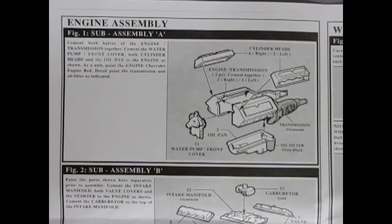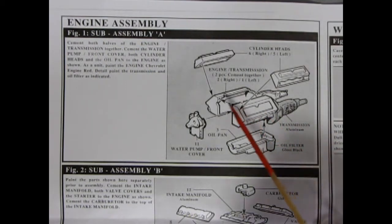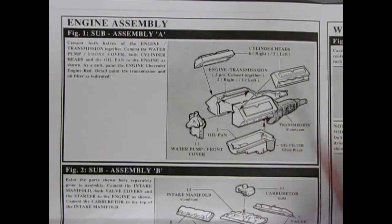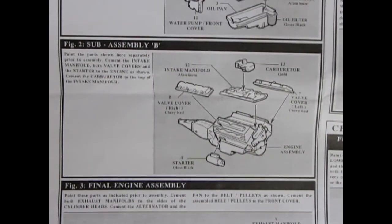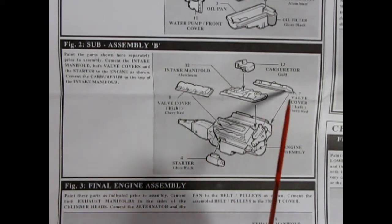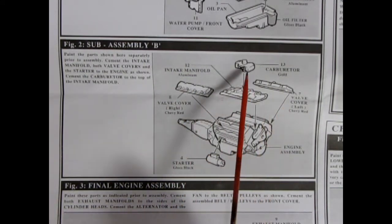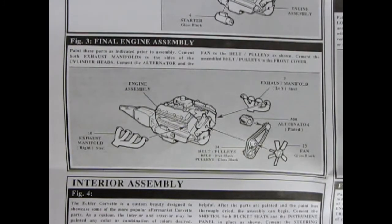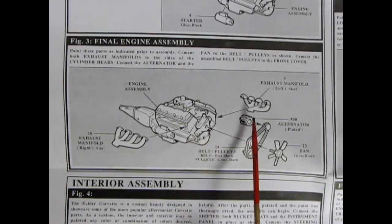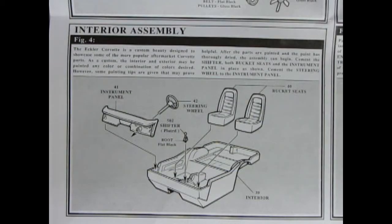Our first panel shows our engine assembly going together. Here we have the left and right hand side engine block, our oil pan, front water pump cover and our cylinder heads. Once we finish assembling those components you can add on your valve covers and your intake manifold as well as your carburetor and starter motor. We can complete our engine by adding on the right and left hand side exhaust manifolds, our alternator pulleys and belt as well as our fan. And now we can get up and boogie.